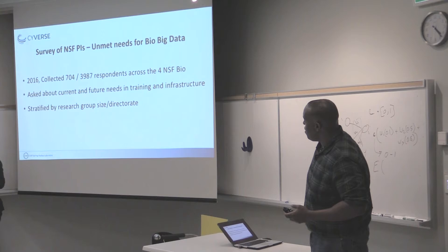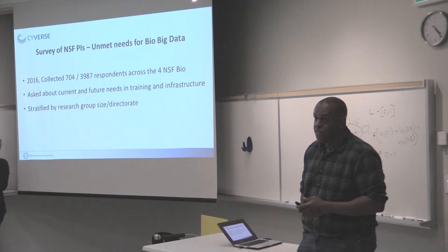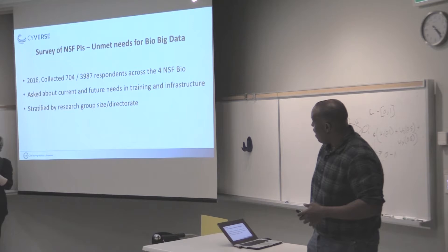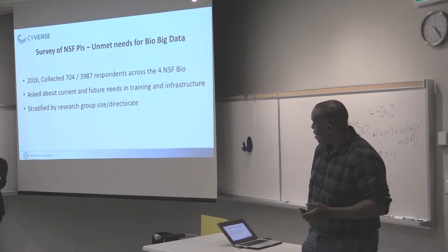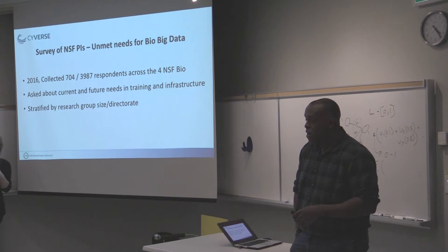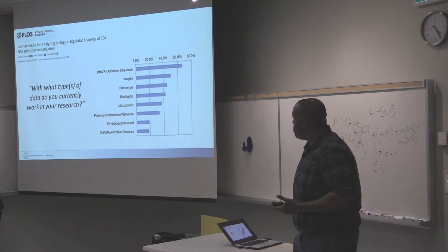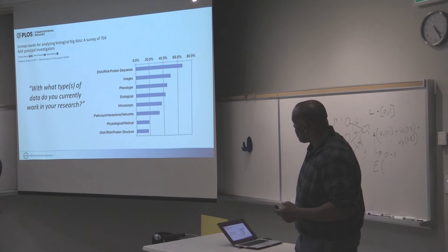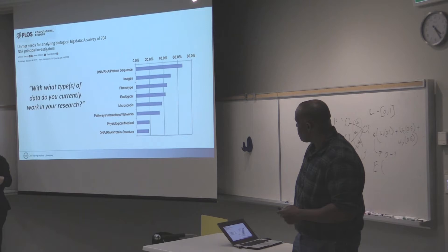We recently asked additional questions to find out what biologists think they need. This is a survey of NSF awardees — PIs who have been successful in getting a grant. 700 people responded out of nearly 4,000 researchers. We asked what their current and future needs are in training and infrastructure, and whether they have enough computers. We also looked at differences between group sizes and types of biological questions. When it comes to data types, sequence is the most important — although I'm worried about images and phenotypes, because that's what's coming next and it will be a much messier problem.